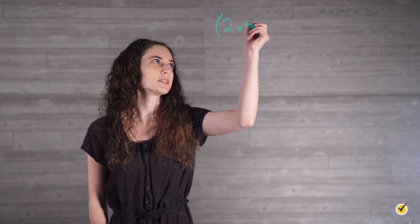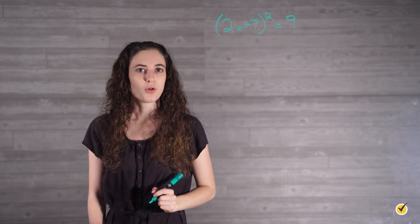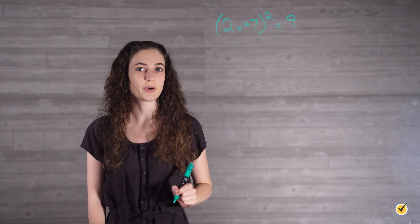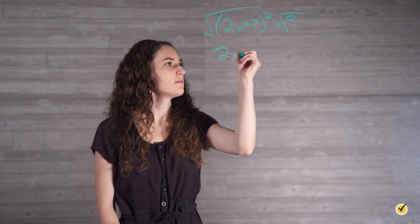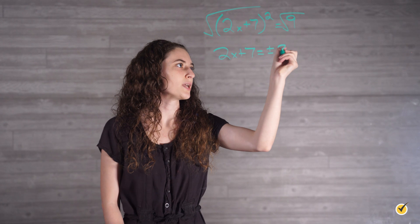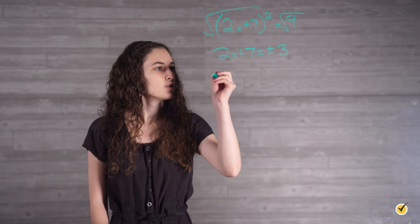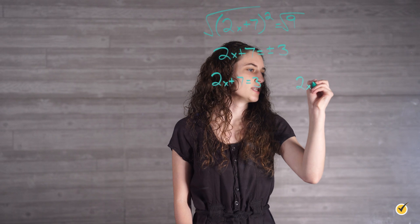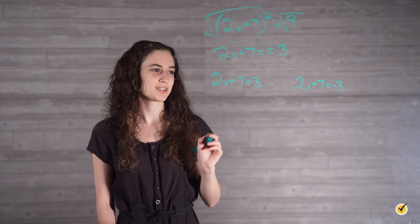Let's try one more example together: 2x plus 7, squared, equals 9. In this example, our first step is to undo the square since the whole expression is squared. If we take the square root of both sides, we get that 2x plus 7 is equal to plus or minus 3. We now need to set up two different equations to find our answer: 2x plus 7 equals 3, and 2x plus 7 equals negative 3.